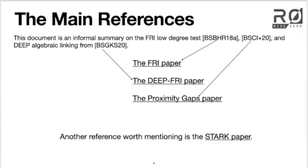The three references mentioned here are the FRI paper, the deep-FRI paper, and the proximity gaps paper. I'll also add the STARK paper to the discussion. The academic literature of our protocol is pretty completely described by these four papers — within the STARK and FRI part, these four papers are the bulk of it.